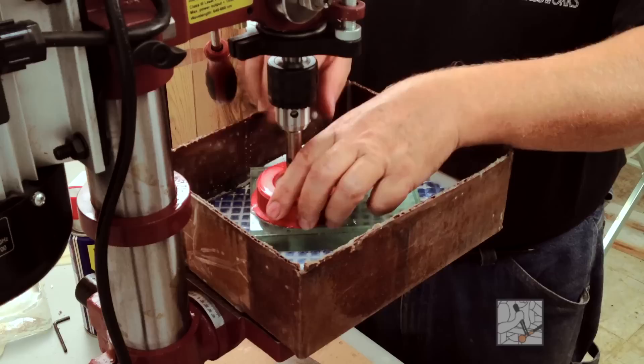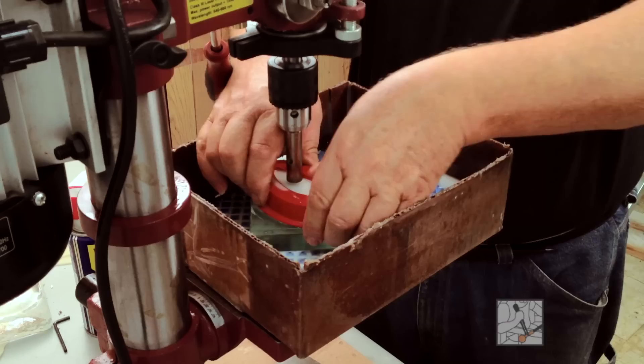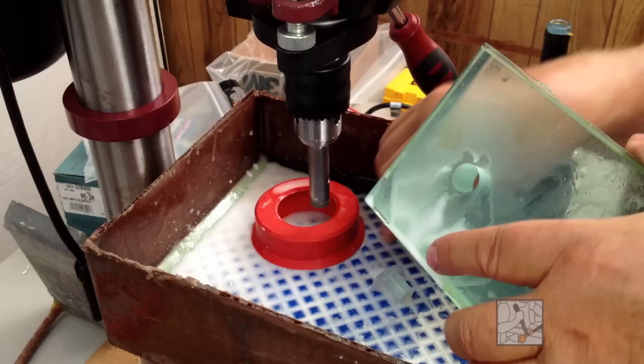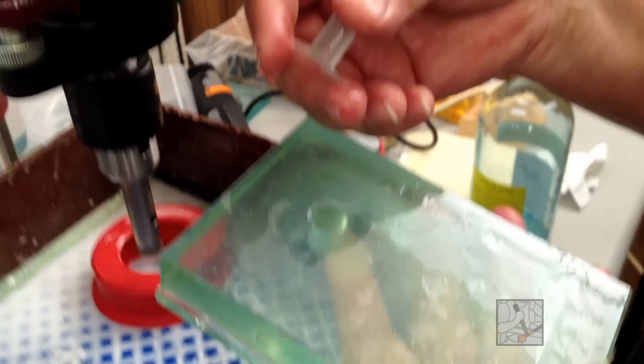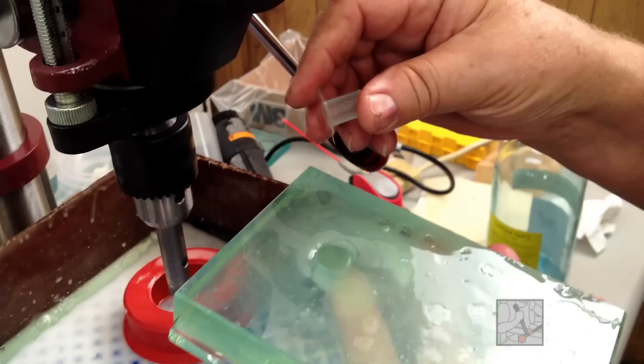In this case now, I'm just going to break the seal on this. That'll let the water out. And here is the glass, and there is the blowout. This is what you want to avoid when you're drilling into your glass.